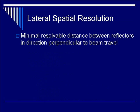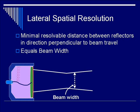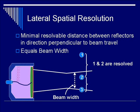Lateral spatial resolution — what is the definition? It is the minimal resolvable distance between reflectors in a direction perpendicular to beam travel. In some sense, it equals the beam width. This illustration shows the beam width as defined within the confines of the ultrasound beam. There are three particles — 1, 2, and 3. Depending on the beam width in relation to the reflectors, you can decide whether they are resolvable or not. Particles 1 and 2 are resolvable because one is in the path of the beam whereas the other is outside the path of the beam.